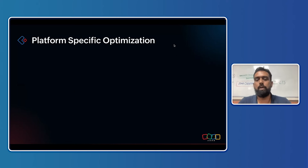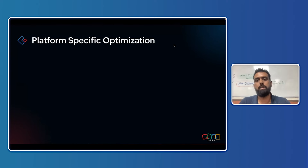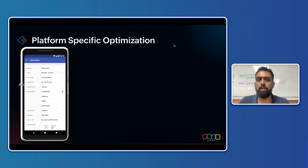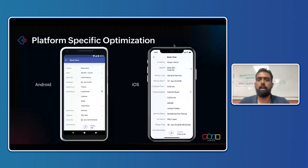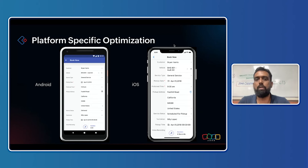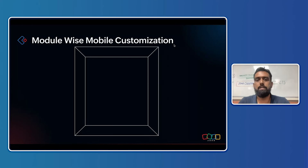When talking about platform-specific optimizations, in traditional mobile development you'd think about separate software for Android and iOS. But in Zoho Creator, you can have both the Android and iOS experience just by developing a web application — then use it on Android or iOS. It's that easy, and it supports both platforms.